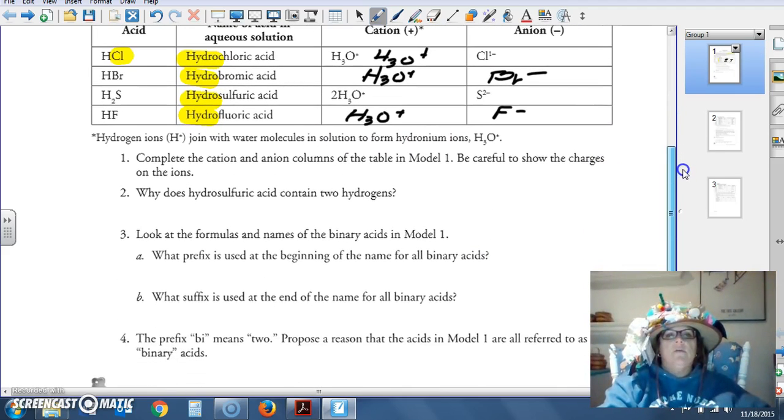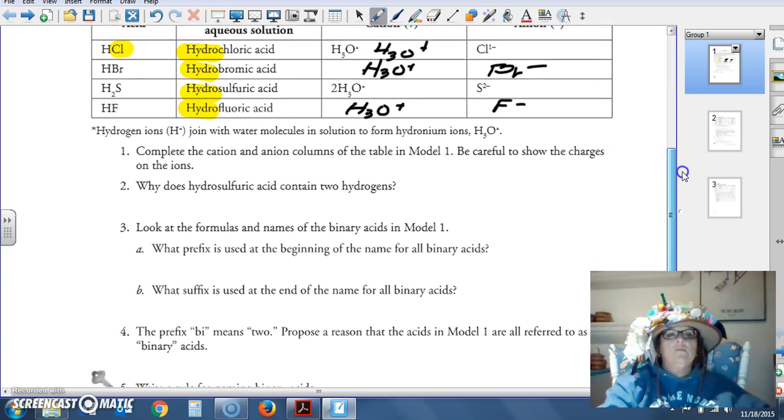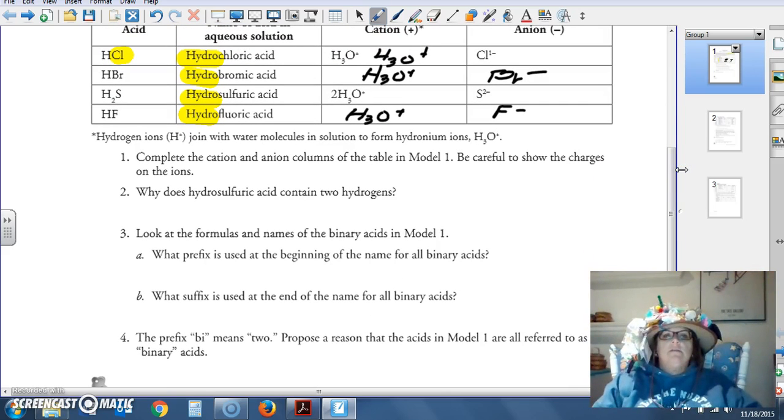Complete the cation and anion columns. We've already done that. Why does hydrosulfuric acid contain two hydrogens? Look here. What do we know about chlorine's ionic charge? Chlorine has a negative one. Bromine has a negative one. Fluorine has a negative one. What does sulfur have? Sulfur has a negative two charge. So therefore it takes two hydrogens to bond with one sulfur, sulfide.